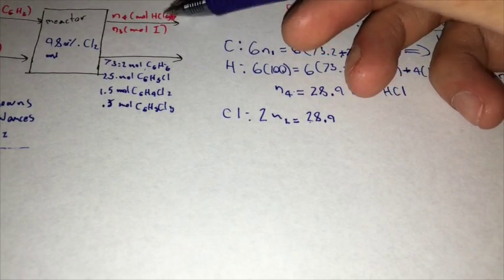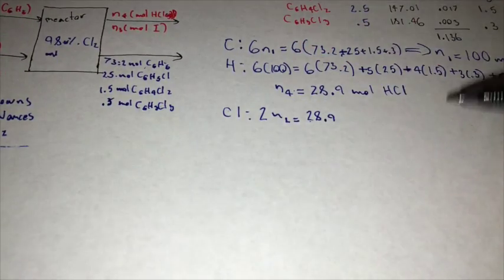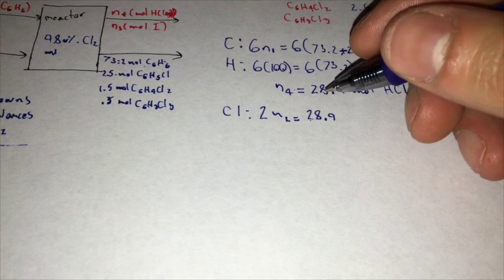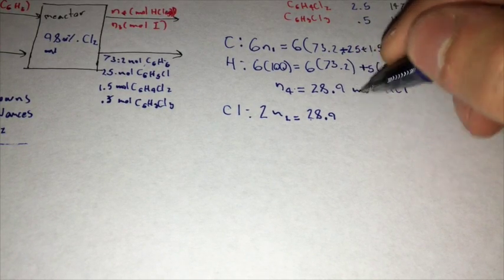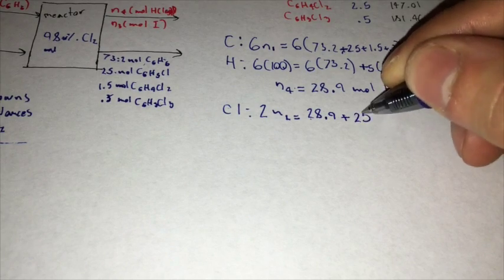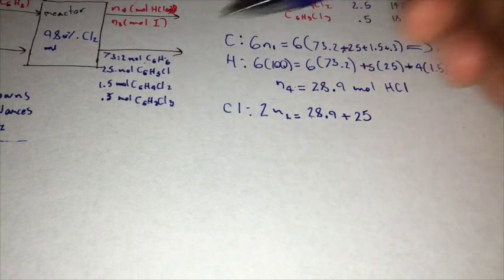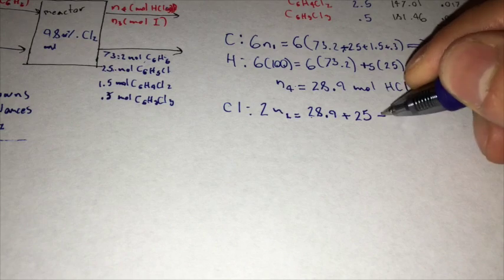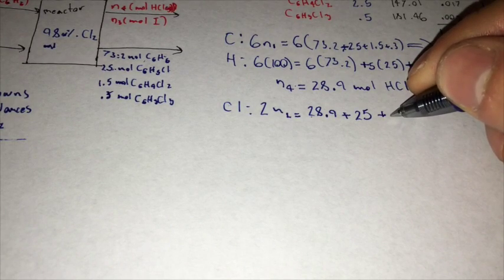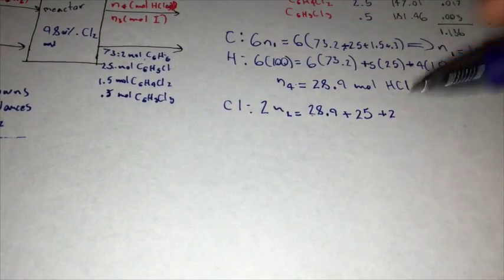So N4 has one chlorine, so 28.9, which is the same as N4, plus 25, because right here we only have one chlorine, plus two chlorines times 1.5.